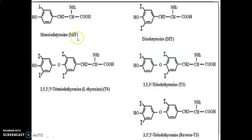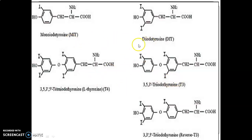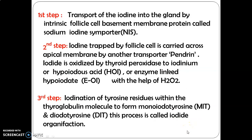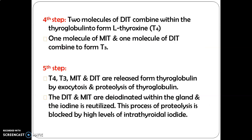The structures of thyroid hormones: monoiodotyrosine (MIT) is a tyrosine — an aromatic amino acid — with iodine at the third position. Diiodotyrosine (DIT) has iodine at the 3 and 5 positions. Combining one MIT with one DIT gives T3, while combining two DIT molecules gives T4. There is also the possibility of forming reverse T3, but it is an inactive form.